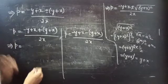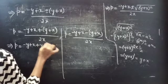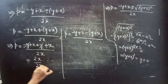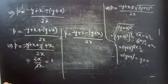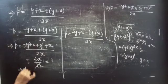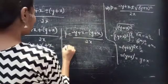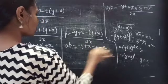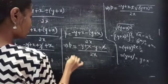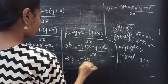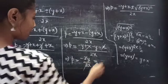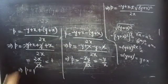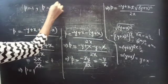Consider the first case: p = [(-y + x) + (y + x)] / 2x. Here -y and +y cancel, giving 2x / 2x = 1. So p = 1. For the second case: p = [(-y + x) - (y + x)] / 2x. Here +x and -x cancel, giving -2y / 2x = -y/x. So p = -y/x.